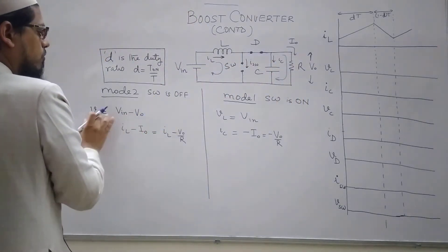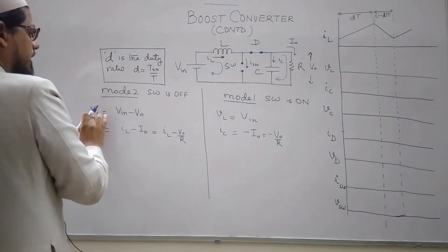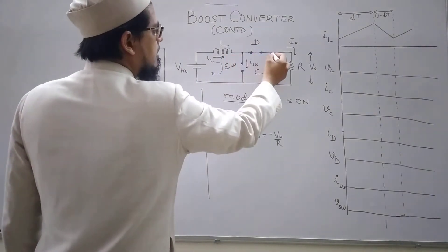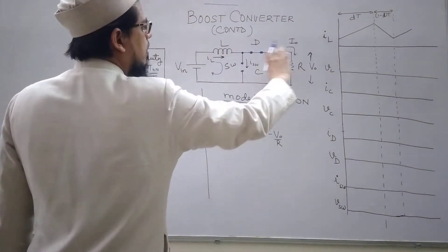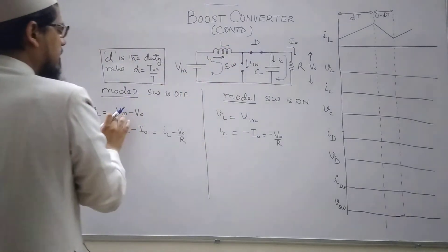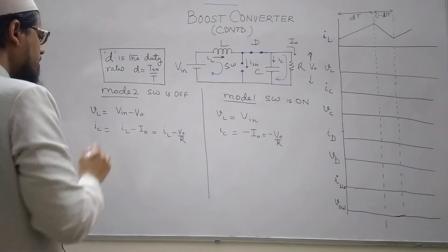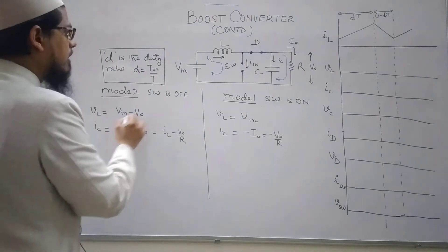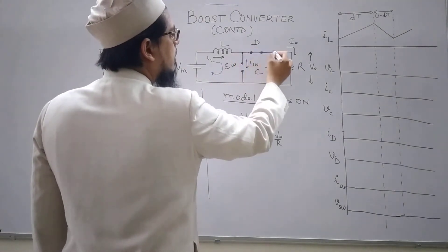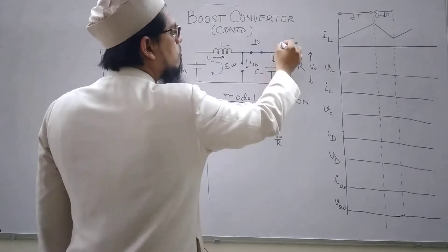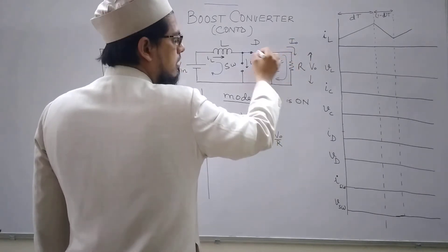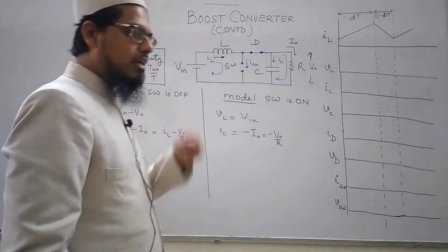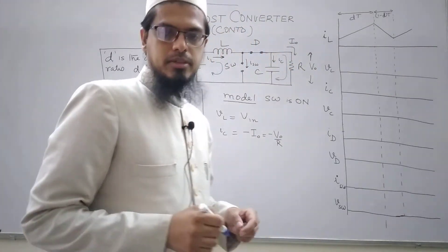In mode 2, the input voltage is related to the voltage across the inductor by: VL = Vin − V0. Since this point is here, this is V0 and this is Vin, so VL = Vin − V0. The current through the capacitor is equal to IL, which flows through the diode and gets divided, giving IC = IL − I0, and I0 = V0/R.